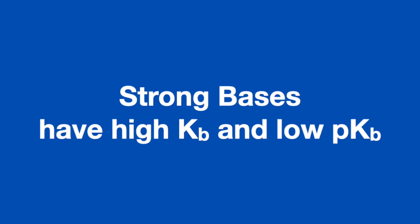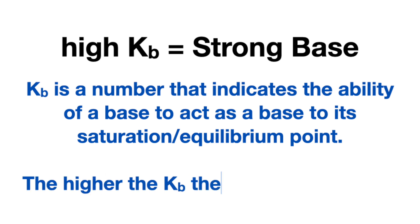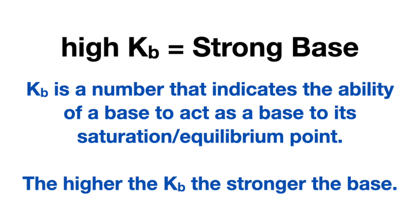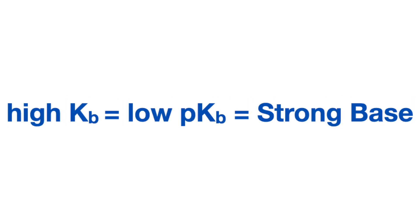Finally, if values are given — Kb and pKb — know that a high Kb means a strong base. Kb is just a number that indicates the ability of a base to act as a base to its saturation or equilibrium point. The higher the Kb, the stronger the base. A high Kb mathematically equates to a low pKb, so a low pKb means strong base. High Kb equals low pKb equals strong base — simple as that. I hope this video helps you identify strong bases or rank them based on strength. Thank you for watching.